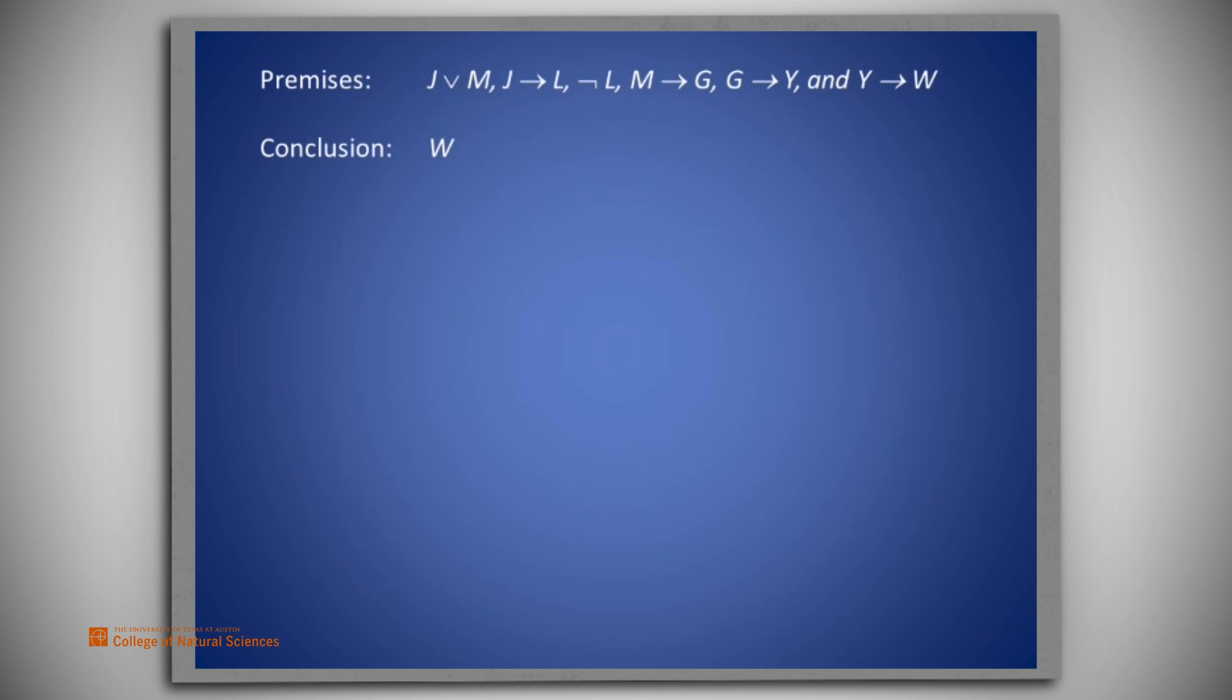Well, from the second premise, we know that J implies L, but from the third premise, we know that L is false. So that means that J is false. As we said, that will give us the intermediate goal of M. If you would like to produce the proof on your own, you should pause this video now.